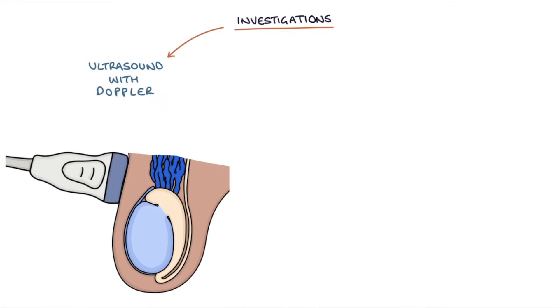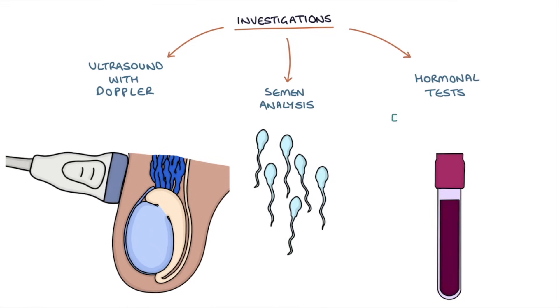Investigations to consider with a varicocele are an ultrasound scan with Doppler imaging, which can be used to confirm the diagnosis, semen analysis if there are concerns about fertility, and hormonal tests, for example, FSH and testosterone, if there are concerns about testicular function.